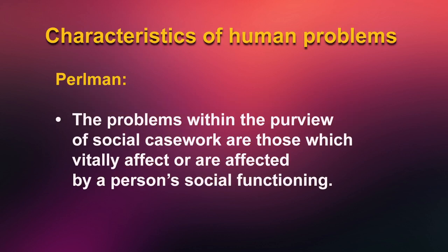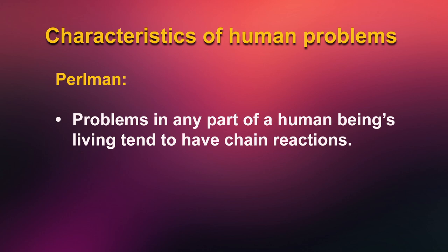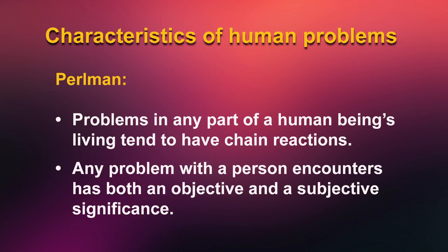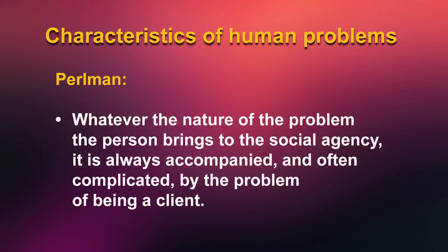Characteristics of human problems (Perlman): 1. Problems within the purview of social casework vitally affect or are affected by a person's social functioning. 2. The multifaceted and dynamic nature of the client's problems makes it necessary for the caseworker and client to select some part of it as the unit for work. 3. Problems in any part of a human being's living tend to have chain reactions. 4. Any problem a person encounters has both objective and subjective significance. 5. External objective and internal subjective aspects coexist, and either may be the cause of the other. 6. Whatever the nature of the problem, it is always accompanied by the problem of being a client.